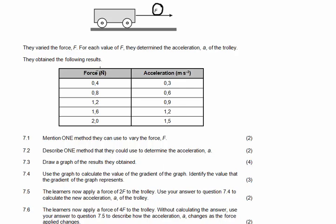Here they say that for each value of F, they determine the acceleration a of the trolley. They obtain the following results, and then they give us the data here. So what do they control? They control the force applied on the trolley. Therefore, the force is going to be my independent variable, making acceleration my dependent variable.